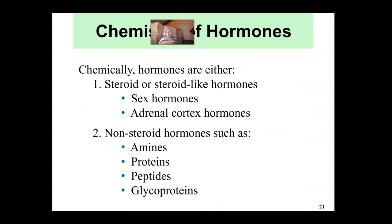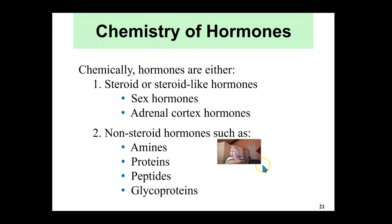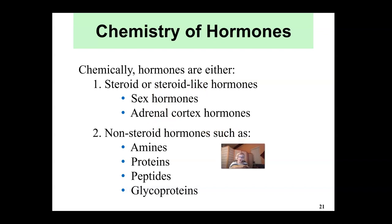Regarding the chemistry of hormones: some are steroid-like, such as the sex steroids or adrenal cortex hormones; others are non-steroid hormones such as amines, proteins, peptides, and glycoproteins.